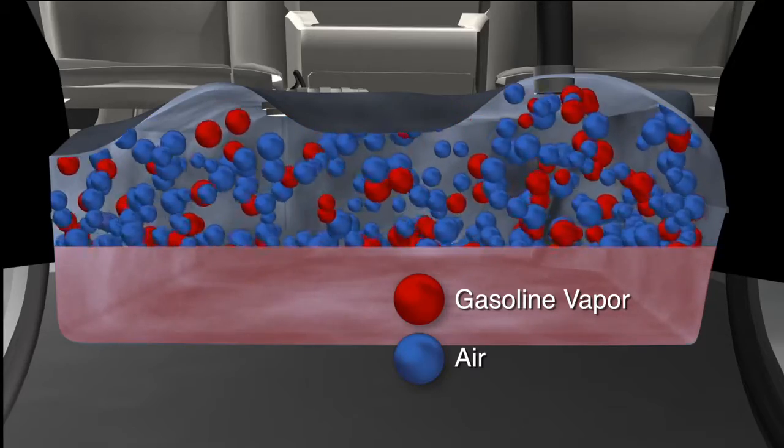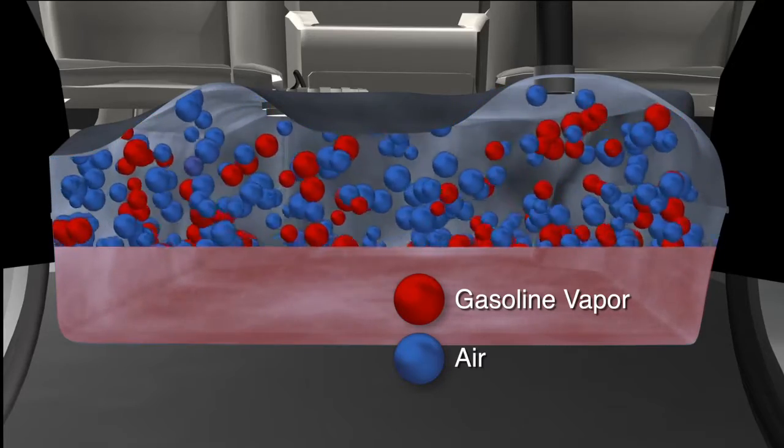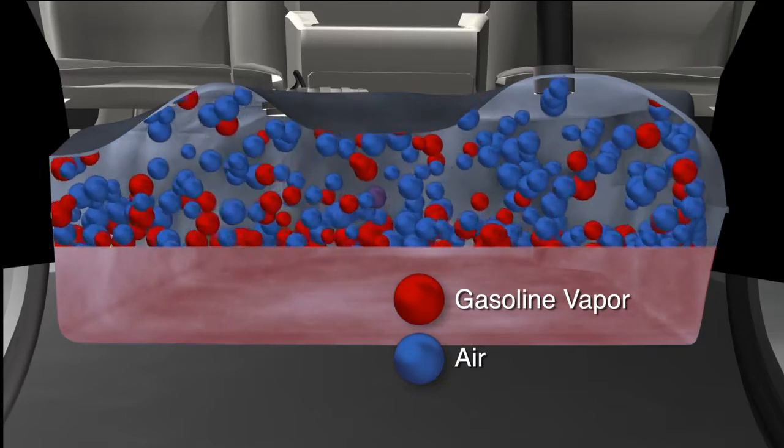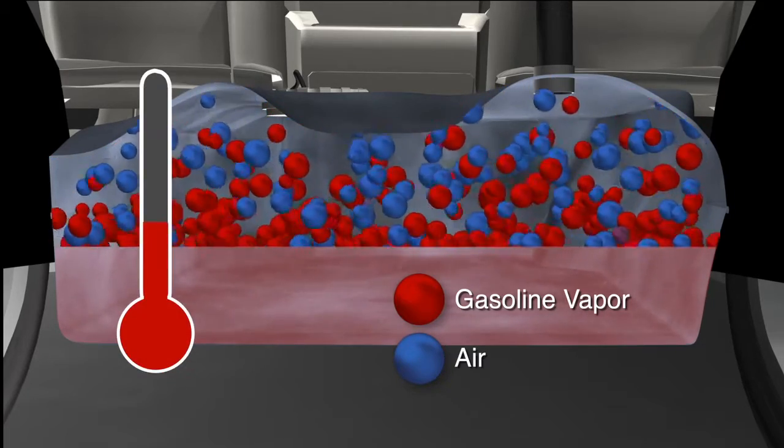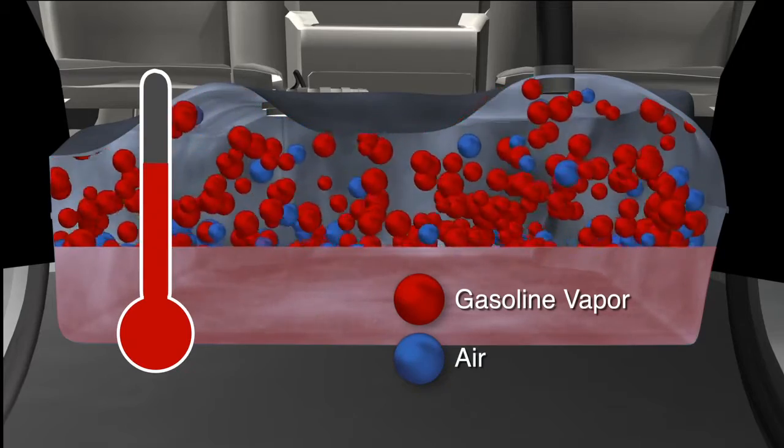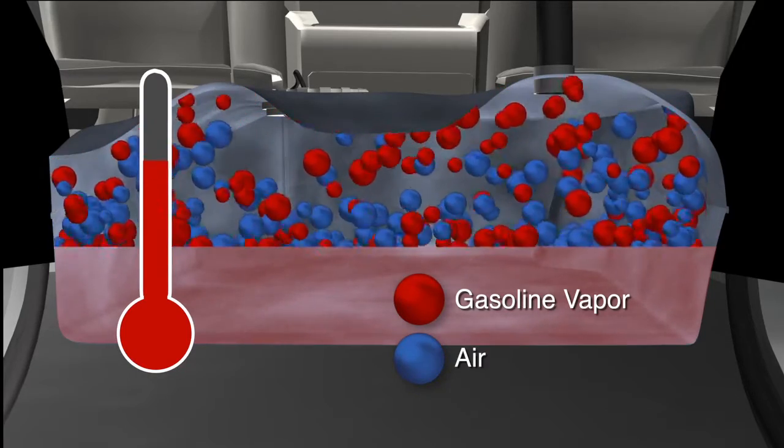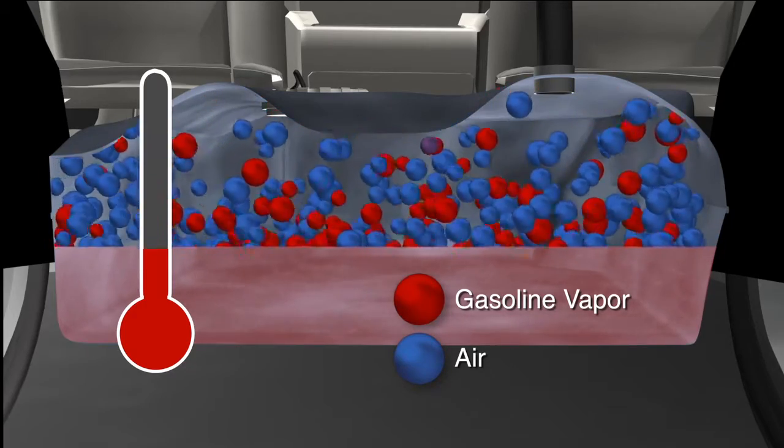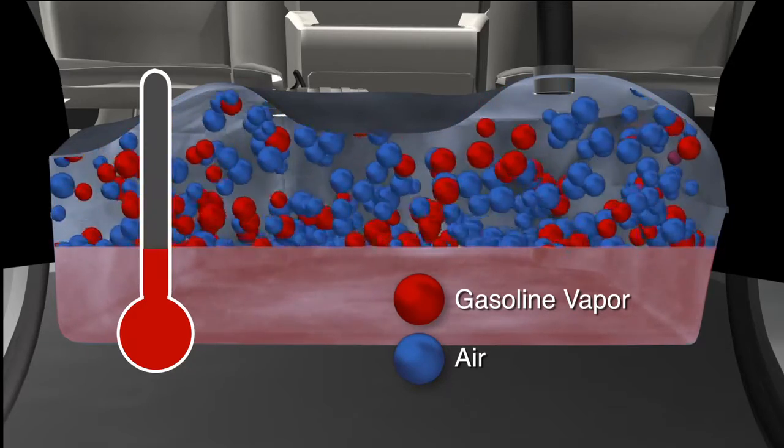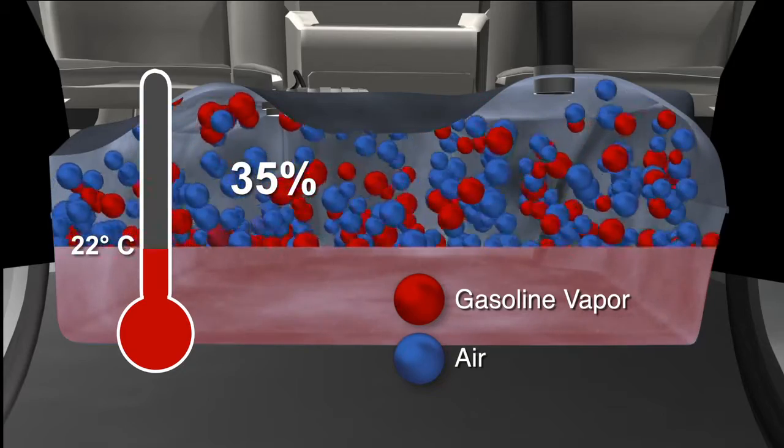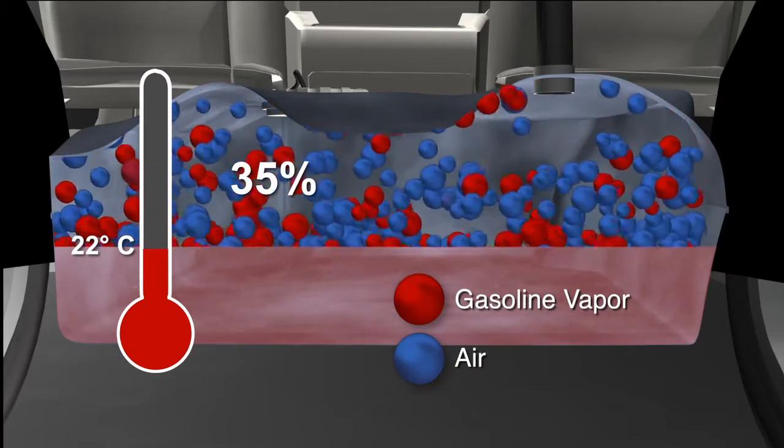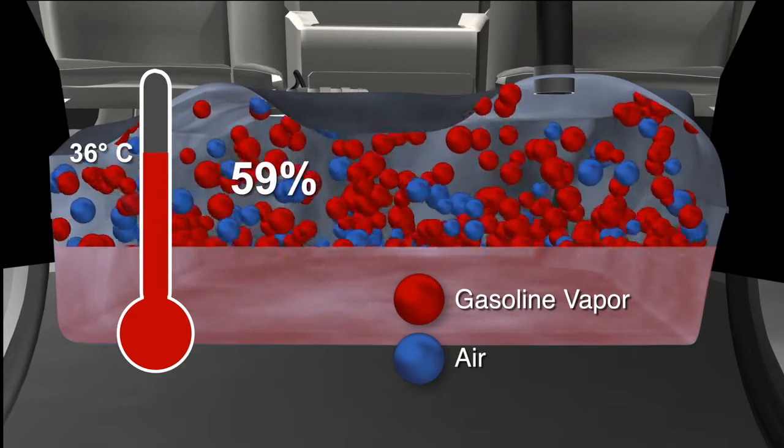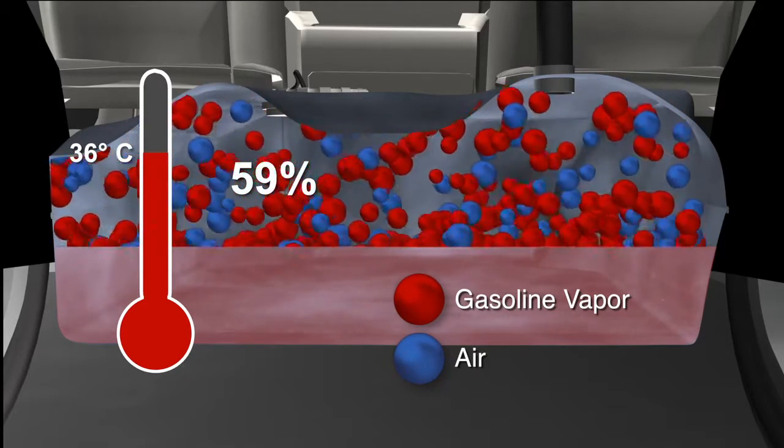Gasoline is a volatile substance. Volatility is a measure of the tendency of a substance to vaporize. As temperature increases, vaporization increases and alternately, a decrease in temperature reverses the process. That's why a storage tank filled with gasoline can have a gasoline vapor concentration of 35% at 22 degrees Celsius and 59% at 36 degrees. And there are other factors that can affect volatility.